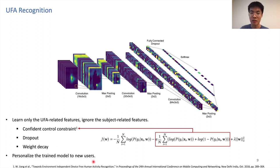Specifically, in the personalization process, we freeze the model except for the last layer, and we retrain the last layer with only a few samples of each UFA from the new user.